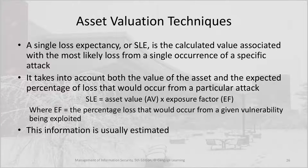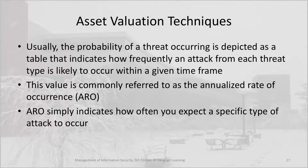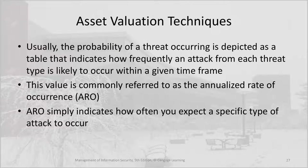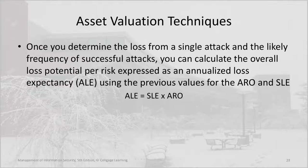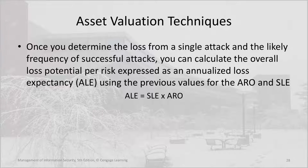This information is usually estimated. The probability of a threat occurring is depicted as a table indicating how frequently an attack from each threat type is likely to occur within a given time frame. This value is commonly referred to as the annualized rate of occurrence, or ARO. The ARO simply indicates how often you expect a particular type of attack to occur. Once you determine the loss from a single attack and the likely frequency of successful attacks, you can calculate the overall loss potential per risk expressed as an annualized loss expectancy using the ARO and SLE.